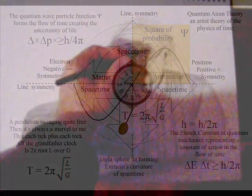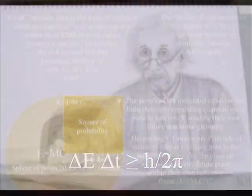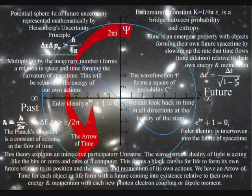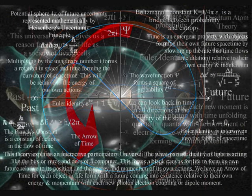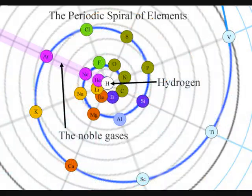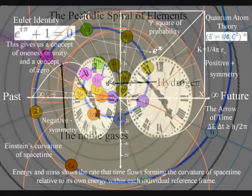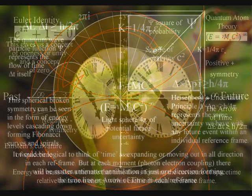This process of continuous change or energy exchange, which we see and feel as the flow of time itself, is totally universal and interactive — from the largest object to the smallest creature, right down to the smallest element of the periodic table, which will slow the rate that time flows, forming a curvature of space-time relative to its own energy or mass.